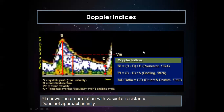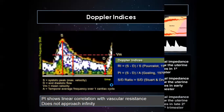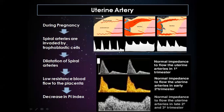Regarding Doppler indices, PI should be used because it shows a linear correlation with vascular resistance. During pregnancy, the uterine artery gets invaded by trophoblastic cells, becomes dilated, and shows a reduced low-resistance flow pattern which helps nutrition and oxygenation of the placenta.